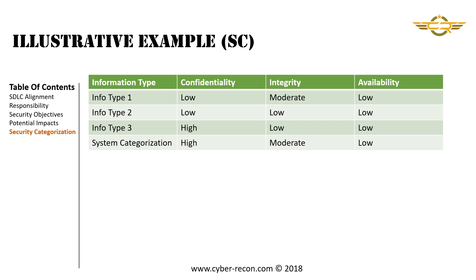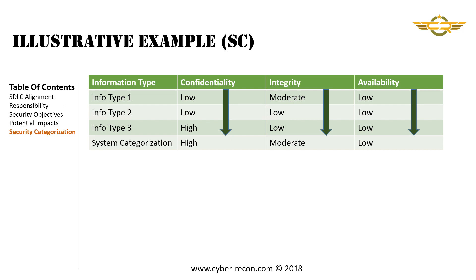It is now fairly simple to define the system categorization using these information types. We start by looking at the confidentiality column and determine the highest rating — which is high. Next, we evaluate the integrity column to determine the highest level — which is moderate. Finally, we evaluate the availability column, resulting in a value of low. Now that we have a system categorization of high, moderate, and low, we determine the system high watermark by evaluating the highest level in that row, which is high, because of the high value in the confidentiality column.